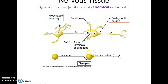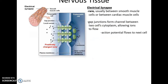At a synapse, the presynaptic neuron forms a synapse with the postsynaptic neuron. The two do not physically touch — there is a small space between them, and chemicals called neurotransmitters are released from the presynaptic neuron to transmit information to the postsynaptic neuron. Occasionally there are rare electrical synapses where membranes of the two cells touch, gap junctions form, and charged ions pass directly from one cell to the next, transmitting the action potential directly.